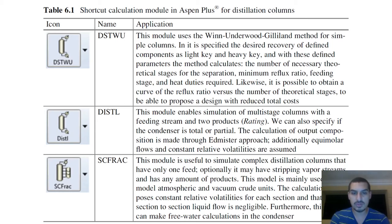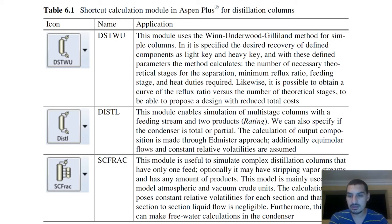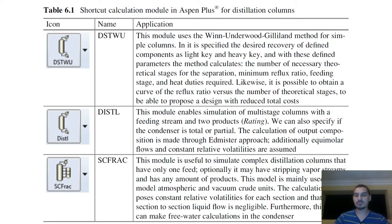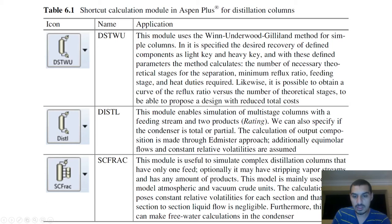In crude oil distillation, you get many side products based on boiling point ranges. Vacuum crude units operate under vacuum to evaporate high molecular weight liquids at lower temperatures, preventing cracking of lighter components that would otherwise break into smaller molecules at the high temperatures required to melt waxes. The SCFrac shortcut block is suitable for these complex column types.